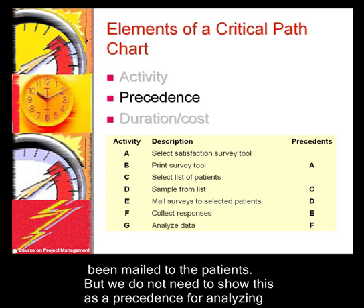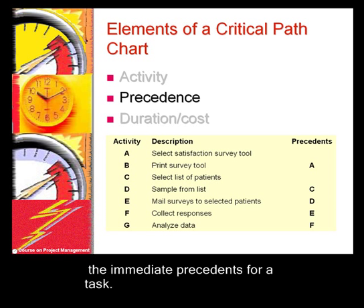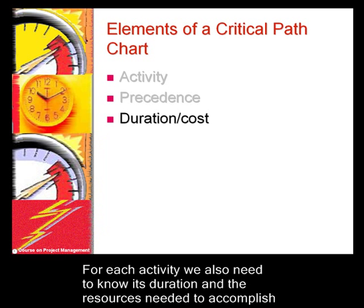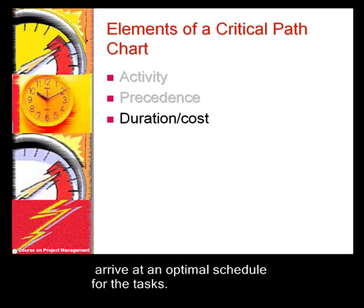The precedence structure also says that we cannot analyze the data until we have collected it. We don't need to show mailing as a precedence for analyzing the data, because it is already a precedence for collecting responses. In a precedence table, we show only the immediate precedence. For each activity, we also need to know its duration and the resources needed to accomplish it. The critical path method uses information on precedence and duration of activities to arrive at an optimal schedule.